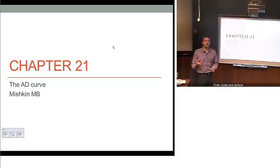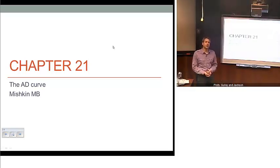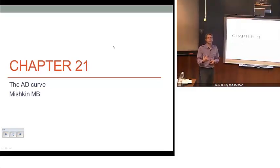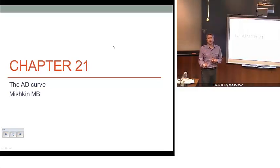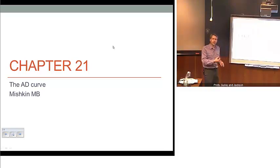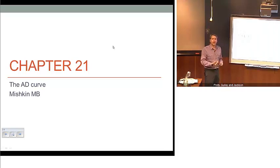Welcome back. This is the second half of Chapter 21 in Michigan's Money and Banking textbook. It explores specifically the connection between the IS curve and the MP curve, which we developed in earlier sections, and how that relates to our notion of aggregate demand. The beauty of this is that it allows us to put all these pieces together to understand the basic mechanics of how demand can change through shocks and policy.